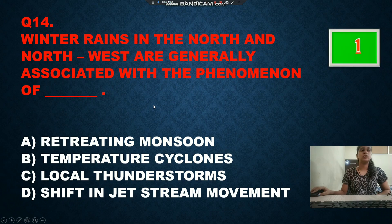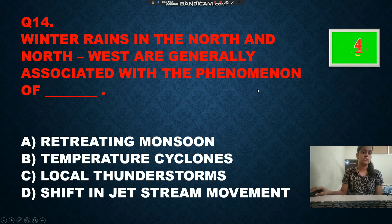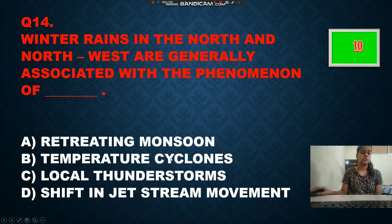Question number 14: winter rains in the north and north-west are generally associated with the phenomenon of — option A is retreating monsoon, option B is western cyclonic disturbance, option C is local thunderstorms, and option D is shift in jet stream. The correct answer is western cyclonic disturbance, option number B.